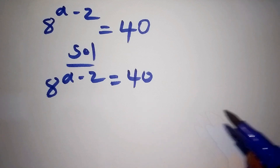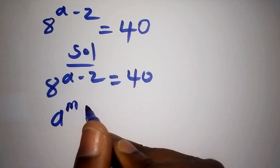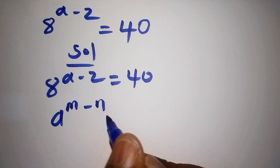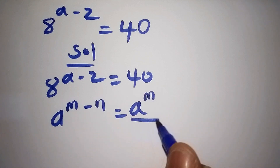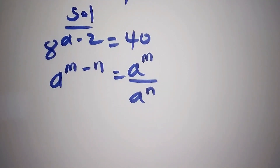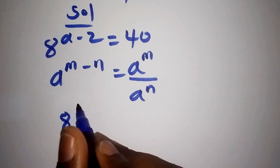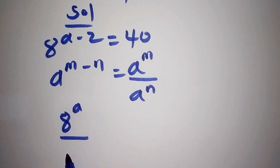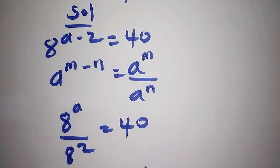It's simple. Assuming that we have A to the power of M minus N, this can also be written as A to the power of M divided by A to the power of N. So that means we shall have 8 to the power of A, all over 8 to the power of 2, equals 40.